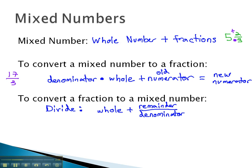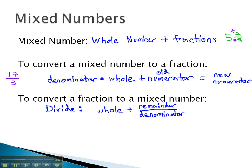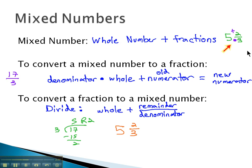So for this example of seventeen-thirds that we were just looking at, we could divide the three into seventeen. Three goes into seventeen five times, and when we subtract fifteen, we see there's a remainder of two. Five with a remainder of two. So we take the whole number five, and the remainder goes up as two over the original denominator, and you see that's the same original five and two-thirds we started with.